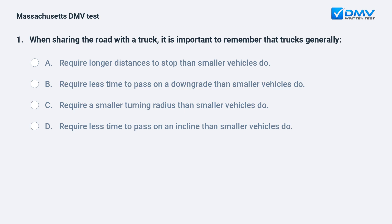b. require less time to pass on a downgrade than smaller vehicles do. c. require a smaller turning radius than smaller vehicles do. d. require less time to pass on an incline than smaller vehicles do.